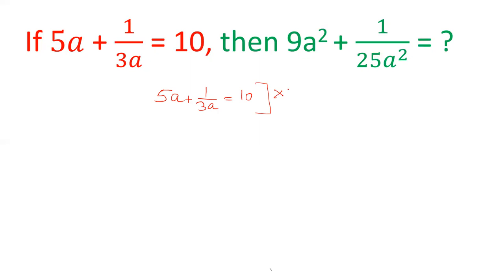So multiply 5a plus 1 by 3a by 3 by 5, which equals 10 times 3 upon 5. After canceling 5 and canceling 3, we get 3a plus 1 upon 5a equals 6.